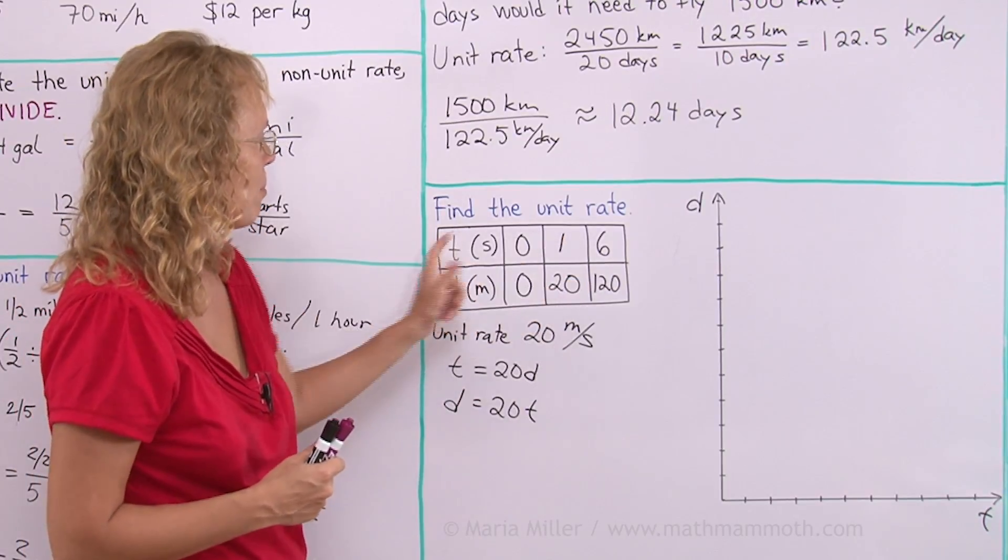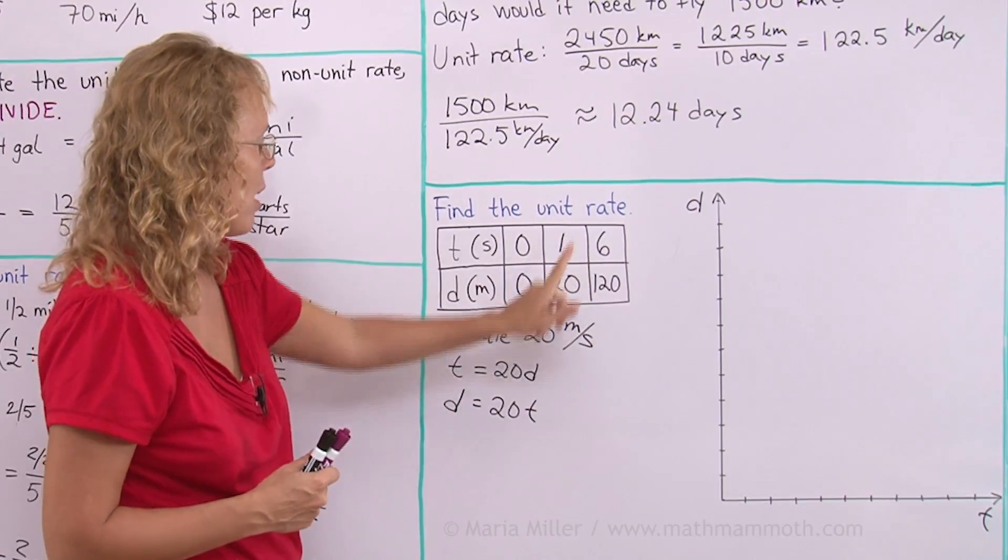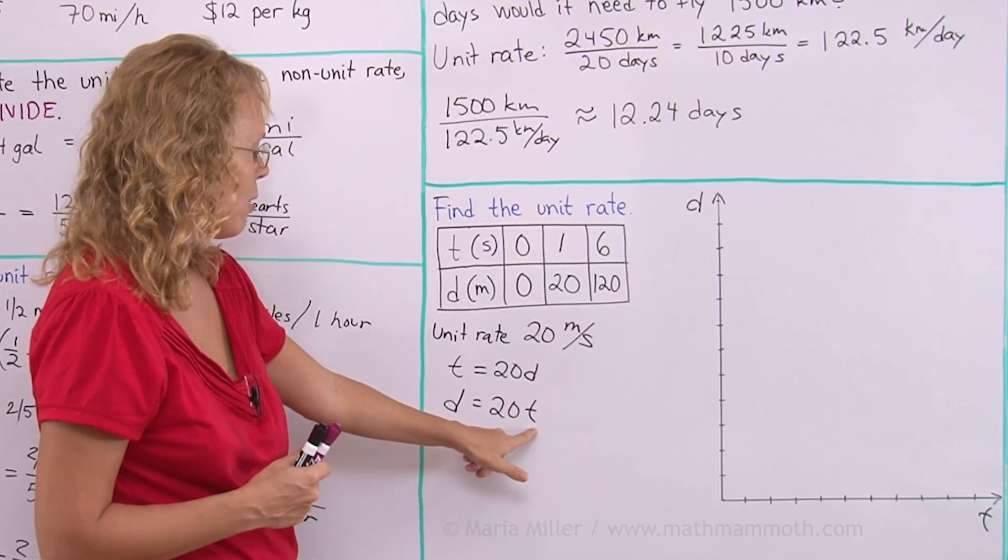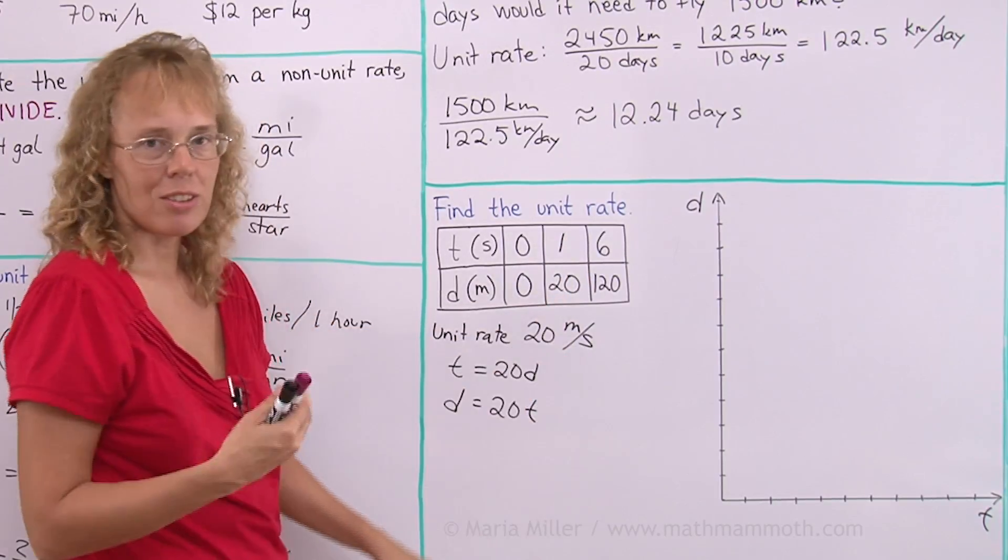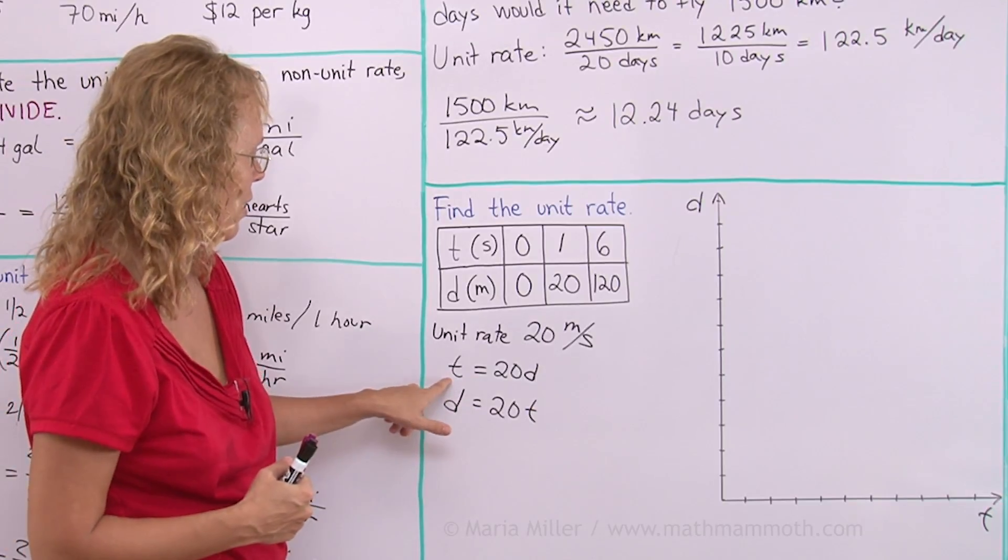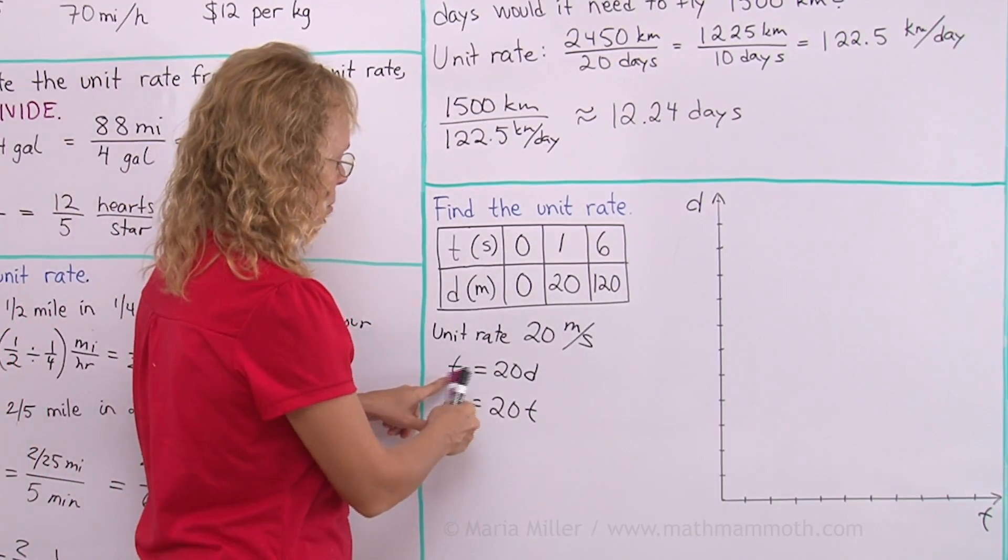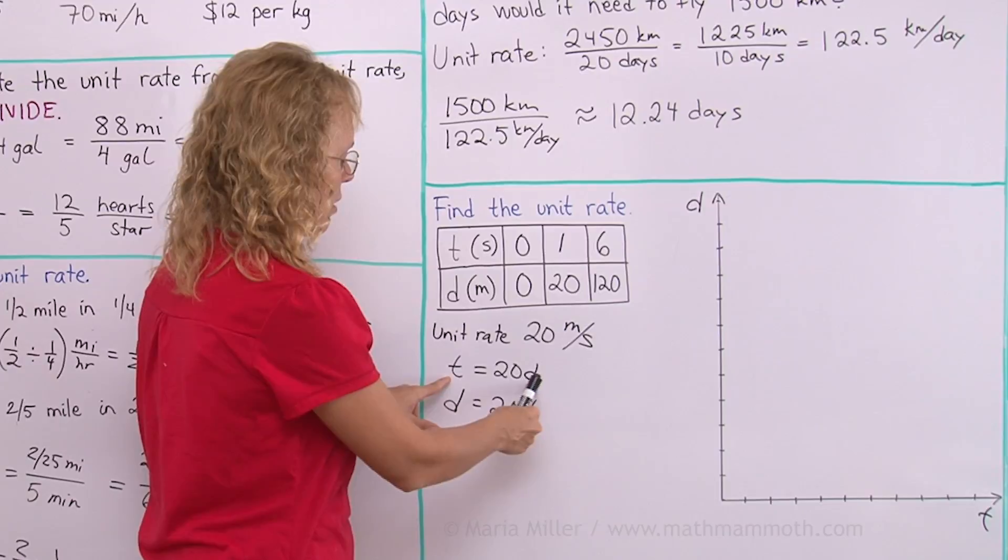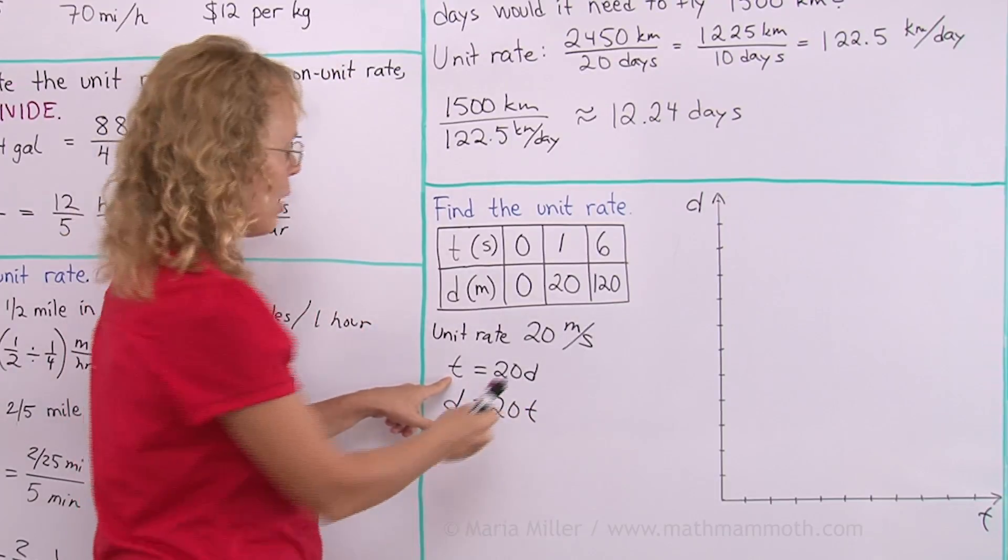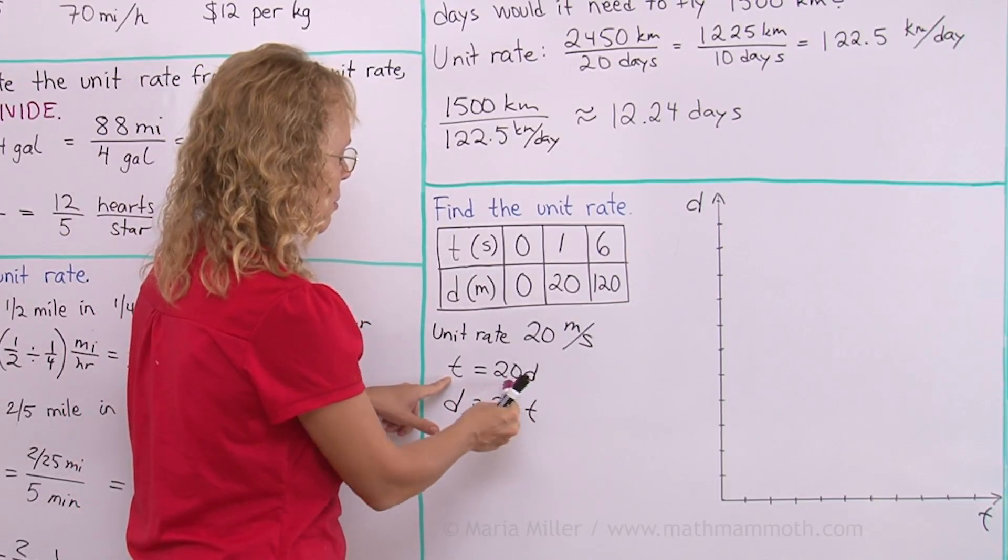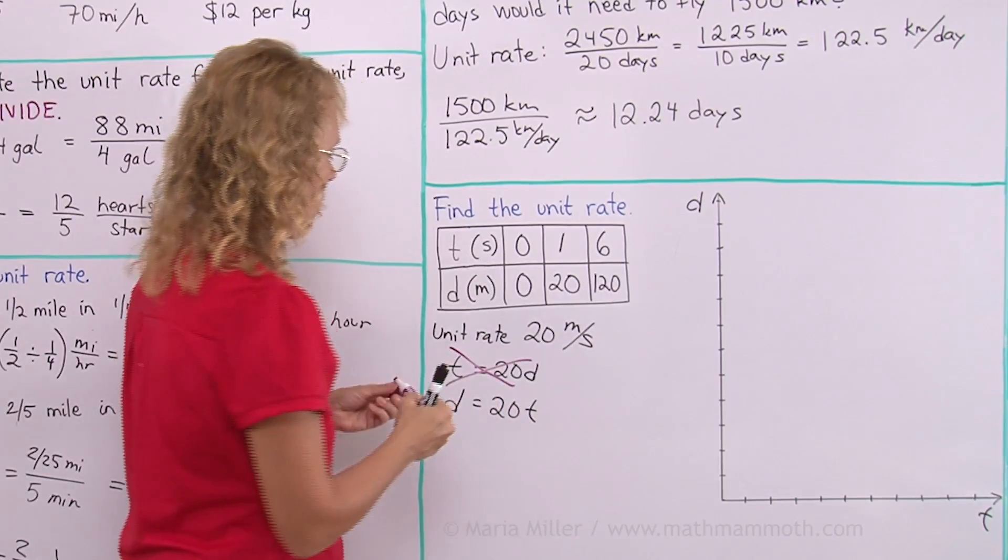Just check that it matches with your table. If t is 1, then will you get 20 as your distance. If t is 1 here, then 1 equals 20 times some number. I will not get 20 here. 20 times 20 would be 400. So this is the one that does not work.